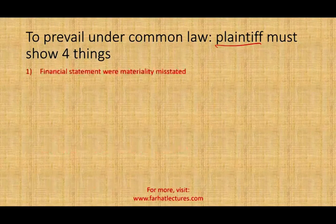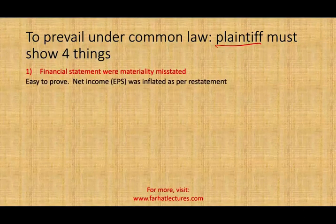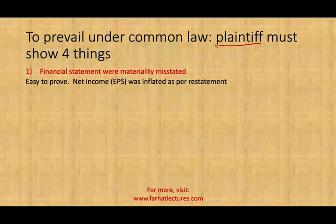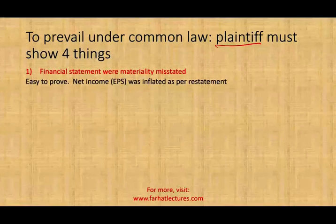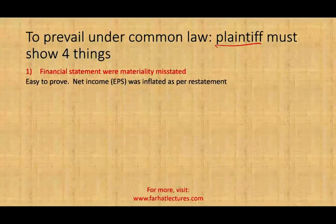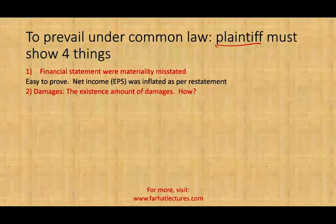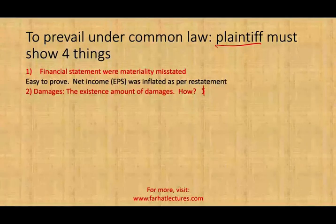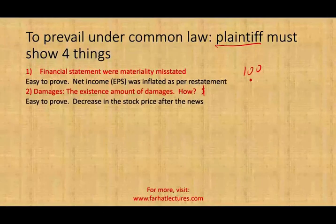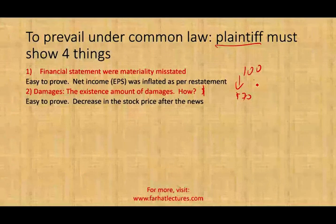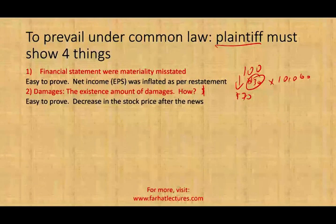First, the plaintiff must show that the financial statements were materially misstated. This is not hard to prove — if the auditor issued an unqualified opinion and later a mistake is found, the prior statements were materially misstated. Second, the plaintiff must show the existing amount of damages — how much did they lose? For a publicly traded company, if you bought stock for $100 and after the restatement it dropped to $70, there was a $30 decrease times however many shares you held, which is easy to show.